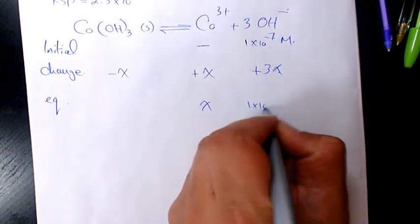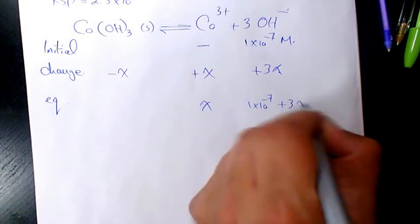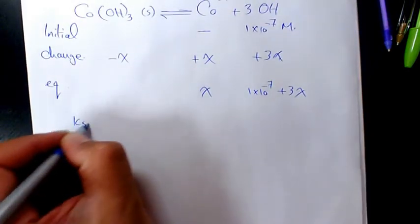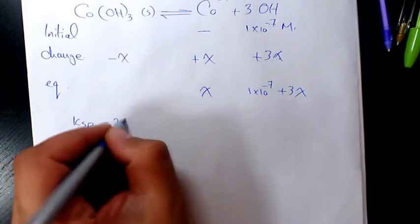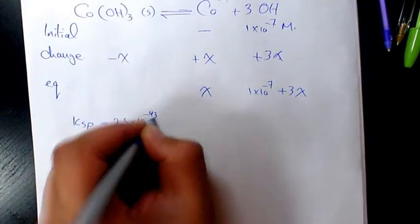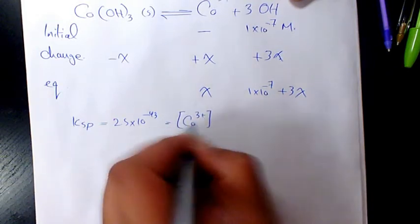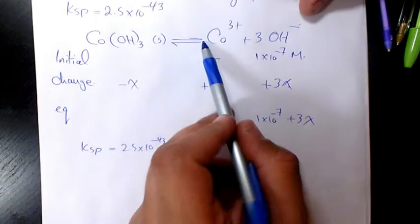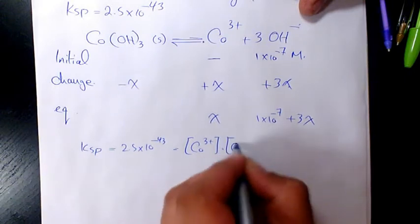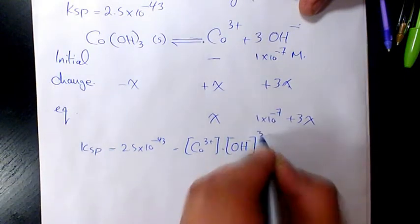So Ksp will be equal to 2.5×10⁻⁴³ equals to cobalt to the power of 1 because the coefficient is 1, times hydroxide to the power of 3.